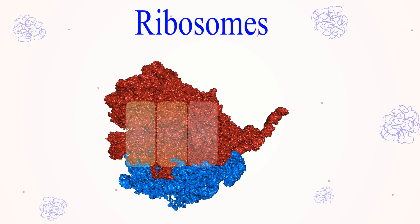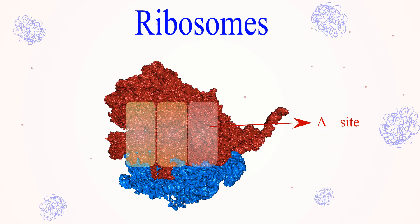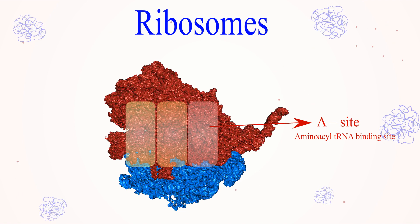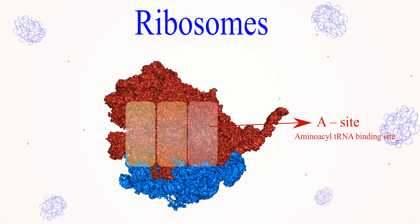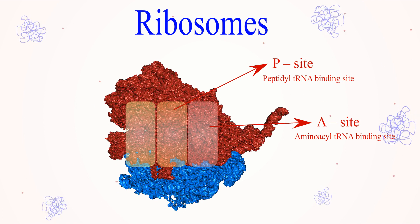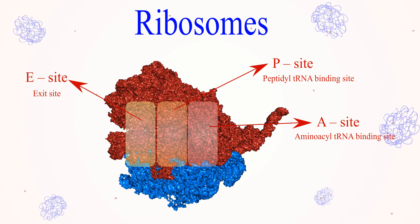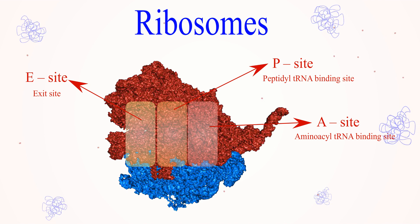Ribosomes have three binding sites for tRNA: A site or aminoacyl tRNA binding site, where the incoming aminoacyl tRNA binds; P site or peptidyl tRNA binding site, where tRNA linked to growing polypeptide chain binds; and E site or exit site, where tRNA binds before its release from the ribosome.